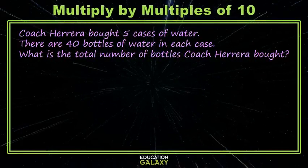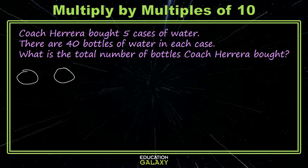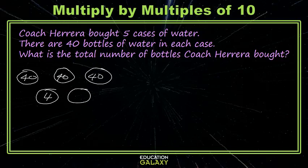Cochoretta is buying five cases of water, and there are 40 bottles in each case. So we have 1, 2, 3, 4, 5 cases, and there are 40 in each case. You could add 40 five times, but we're practicing some new methods. So we have 5 equal size groups of 40, and we'll find that total using multiplication.